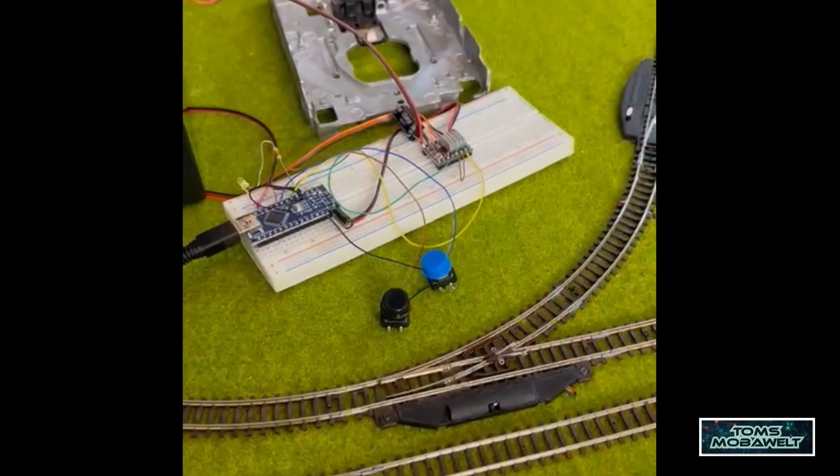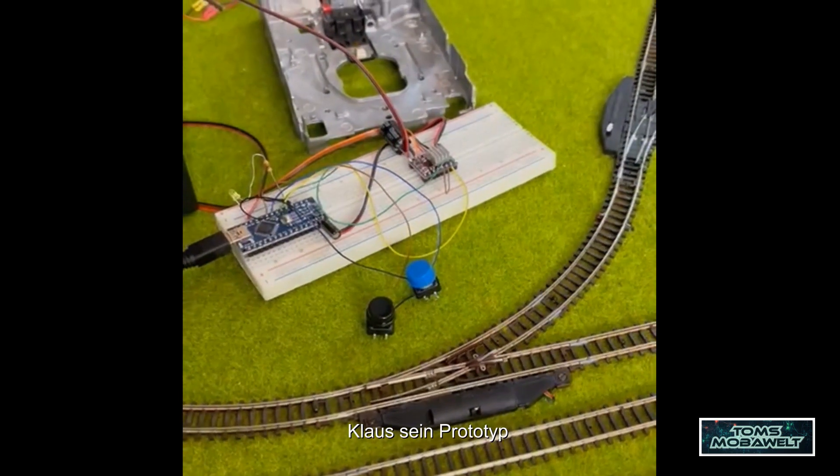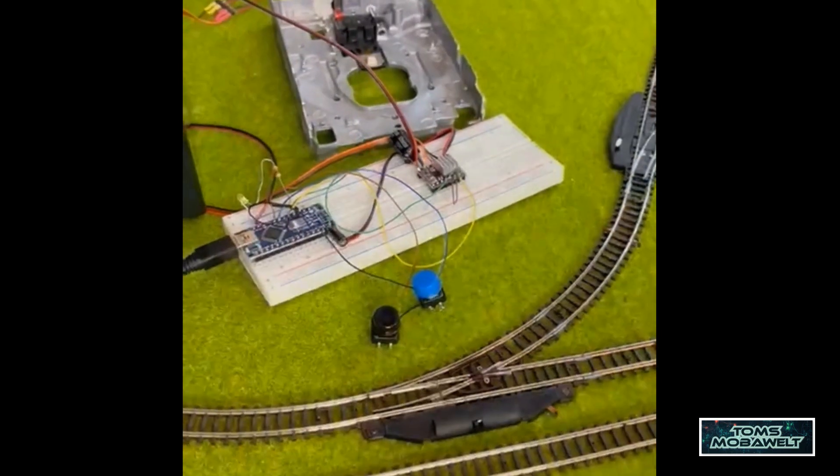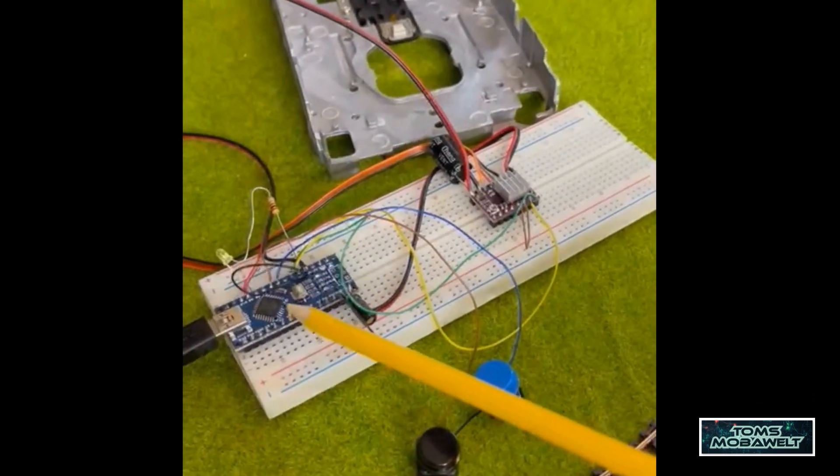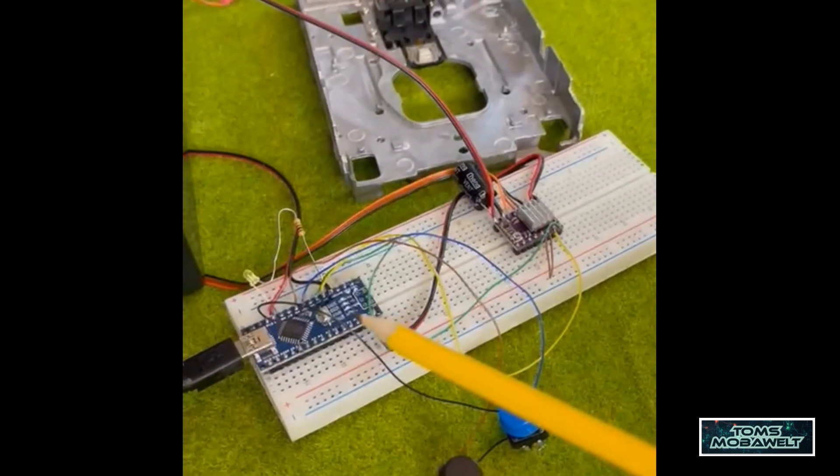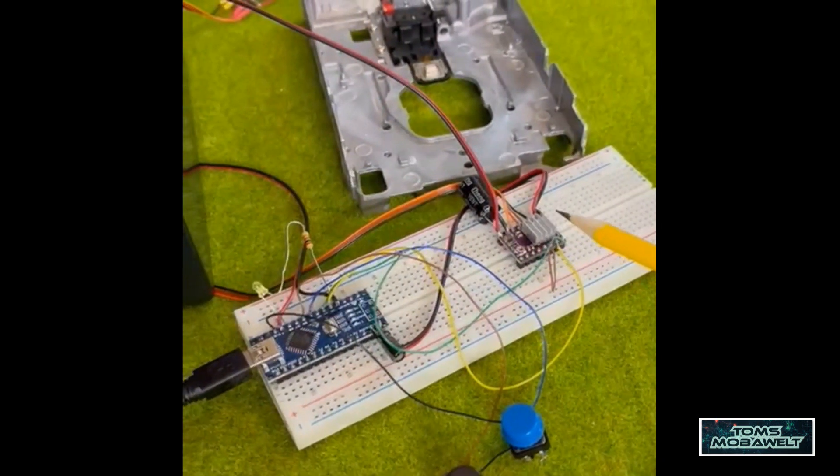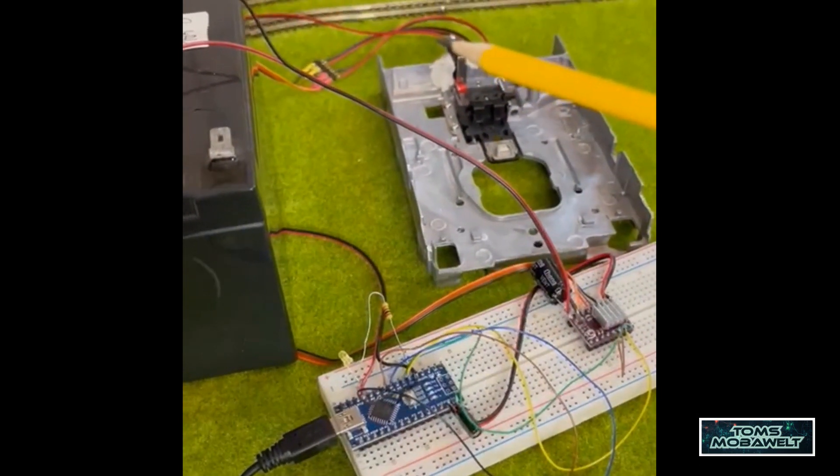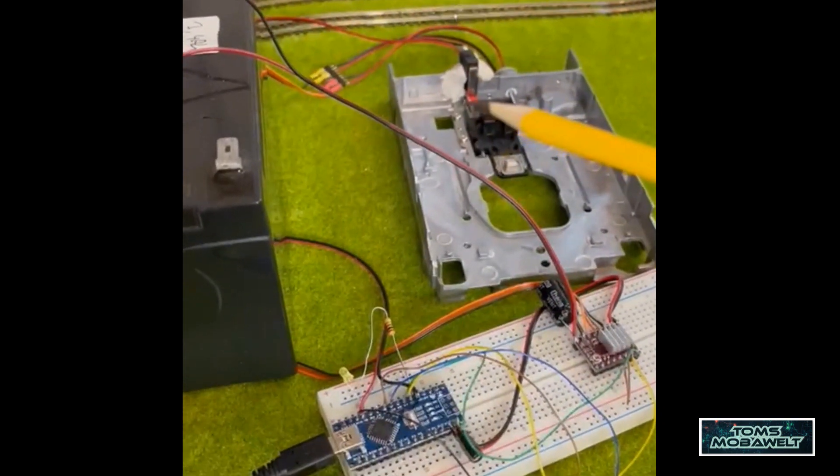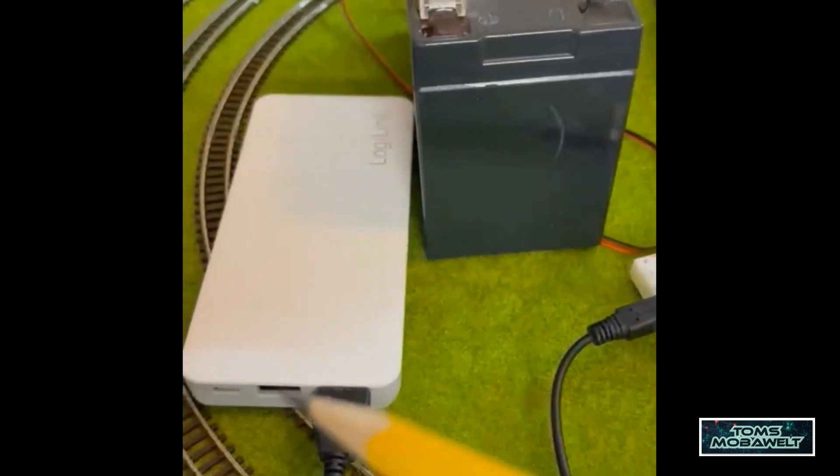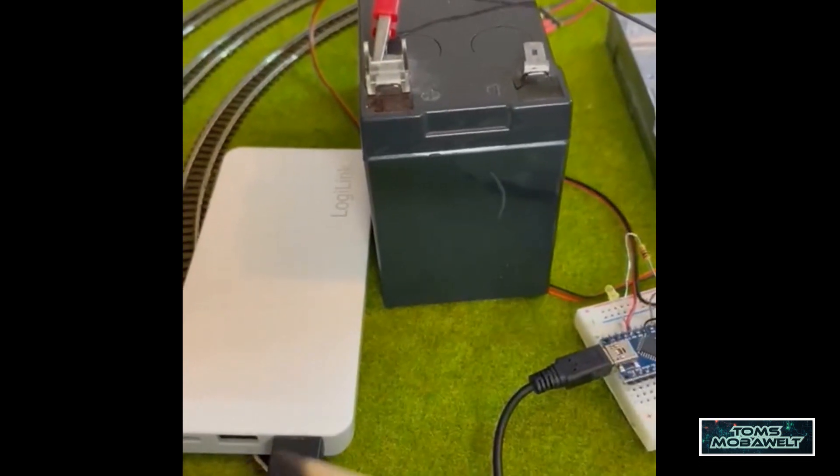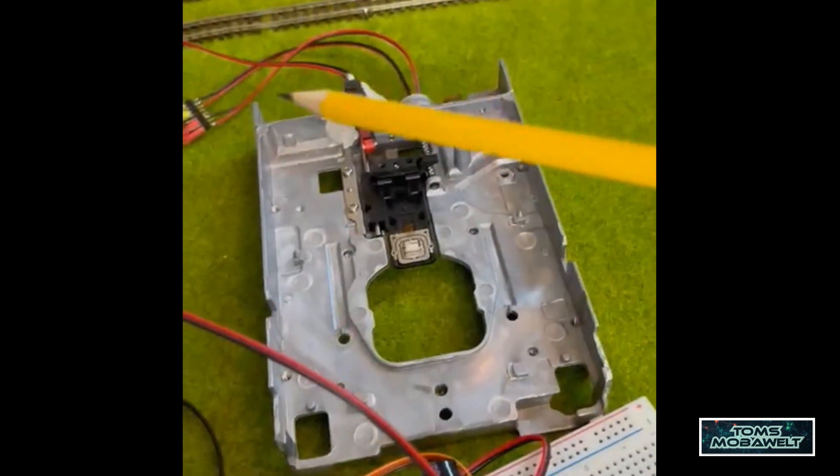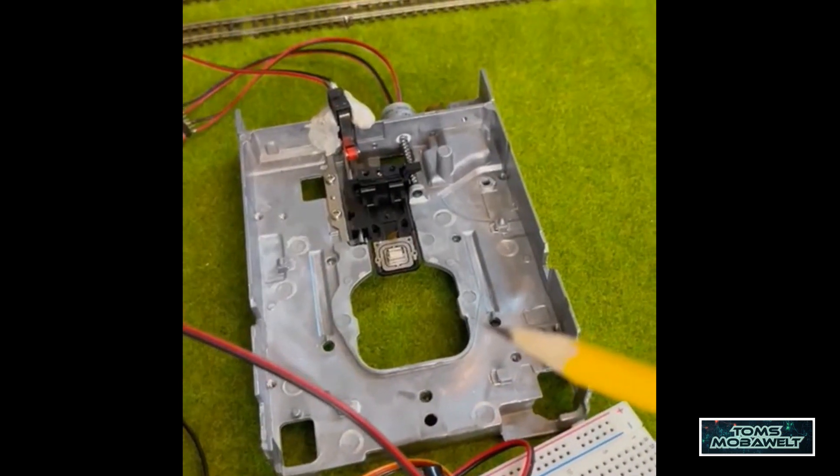Jetzt soll es einmal um die Funktionsweise des Zughebewerkes gehen, aus elektronischer Sicht. Ich fange mit den Komponenten an. Unser Herzstück ist dieser Arduino - der berechnet die Steps. Dann ist hier hinten noch ein Stepper-Motortreiber dran, ein vierpoliger Stepper-Motor, wie man sie von 3D-Druckern kennt. Dann habe ich eine 12-Volt-Stromversorgung und 5-Volt für den Arduino aus einer Powerbank.